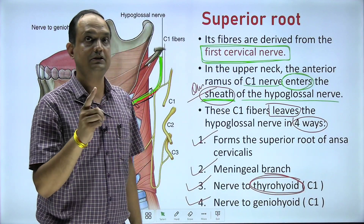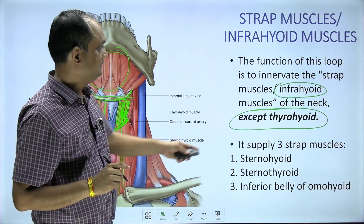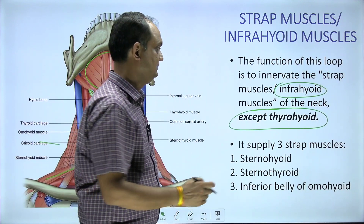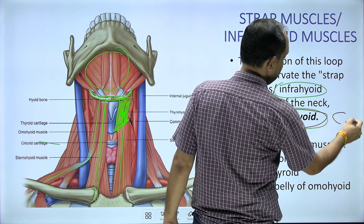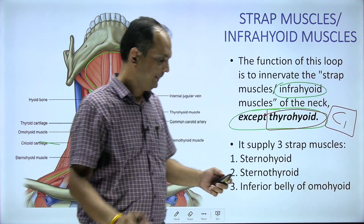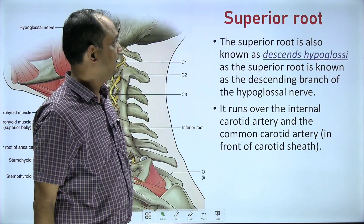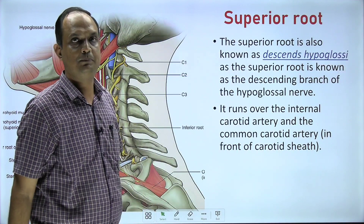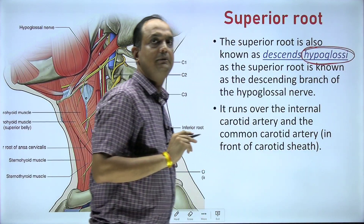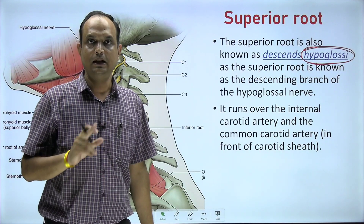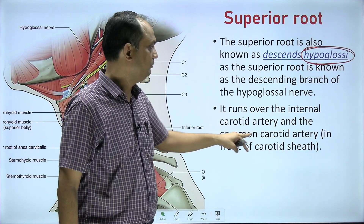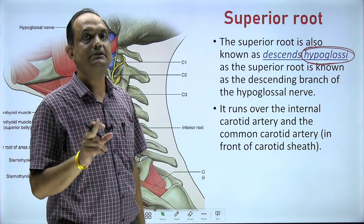The thyrohyoid muscle is not supplied by the ansa cervicalis loop, but it is still supplied by C1 — it is a direct supply, not through the loop. The superior root is also known as 'descendens hypoglossi' because it looks like a descending branch of the hypoglossal nerve. This superior root runs over the internal carotid artery and common carotid artery. It has no relation with the external carotid artery, because the carotid sheath does not include the external carotid — it includes only the common carotid and internal carotid.